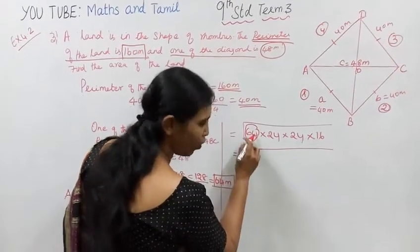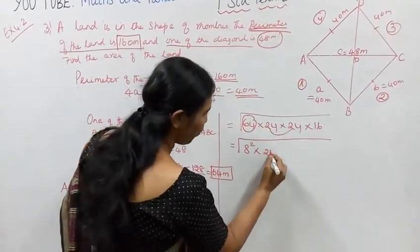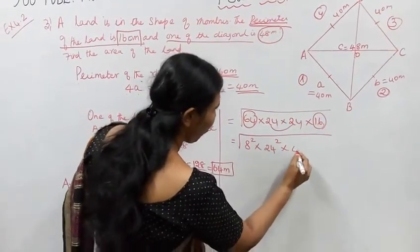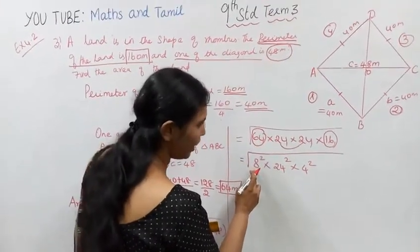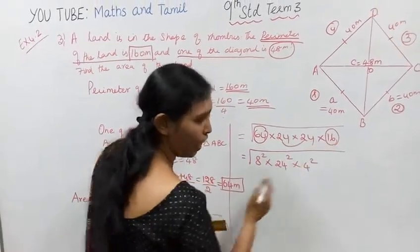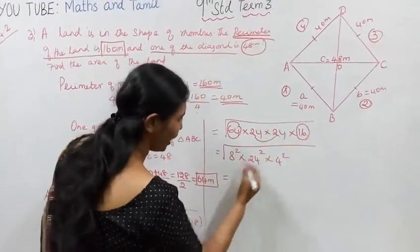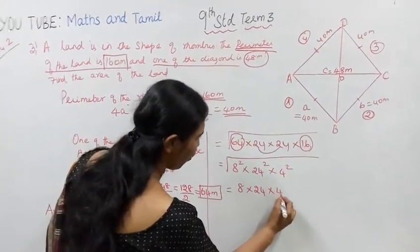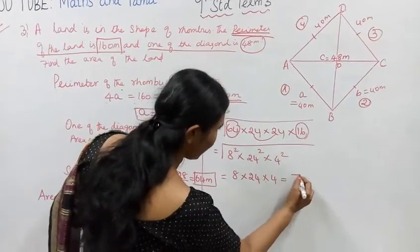16 is 4 squared. Taking the square root gives 8 times 24 times 4, which equals 768 meters squared.